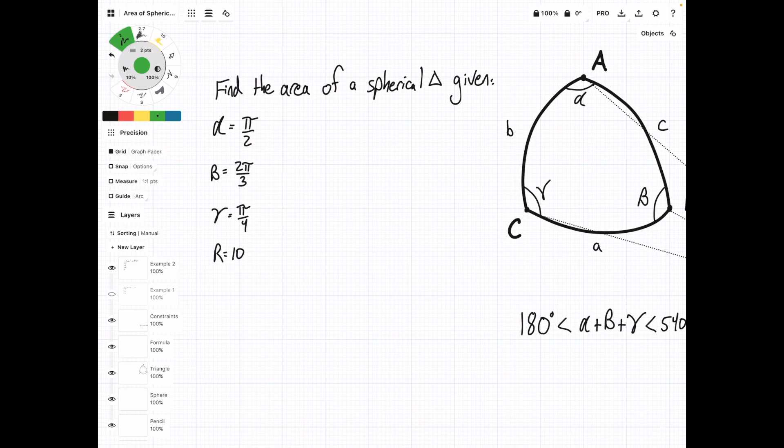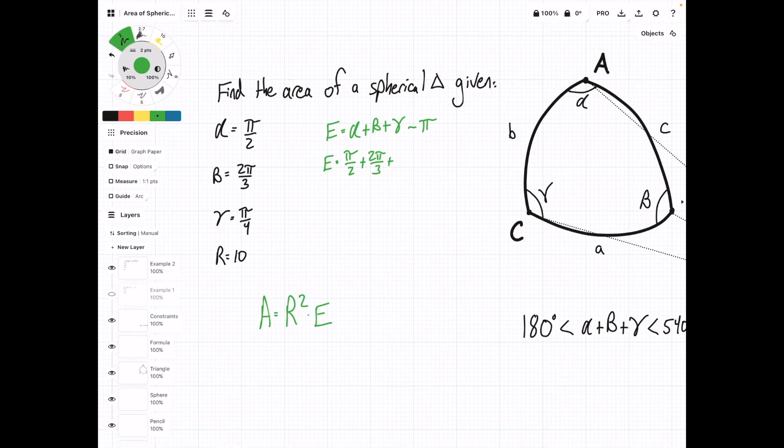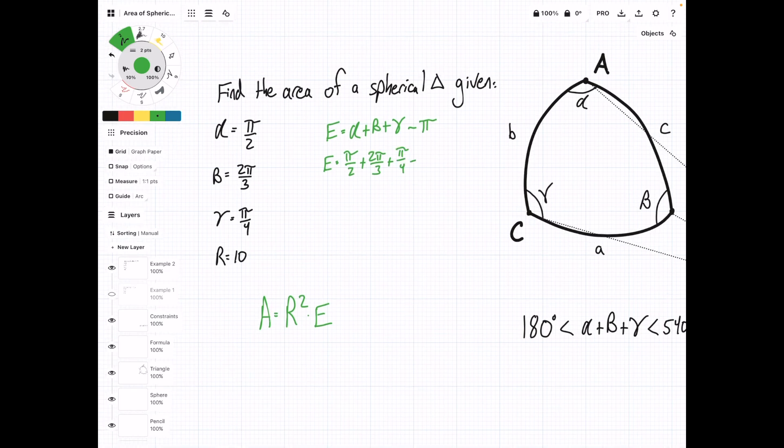We can just use Girard's theorem straight up. This is going to be A equals r squared times the spherical excess. Now, we will find the spherical excess, which again is alpha plus beta plus gamma, basically all of the angles in the triangle, minus pi. E equals pi over 2 plus 2 pi over 3 plus pi over 4 minus pi.